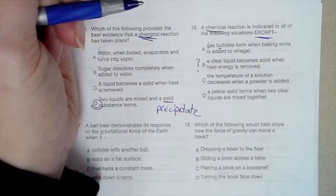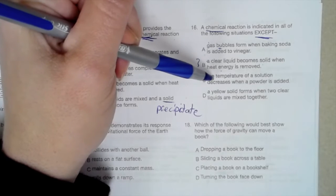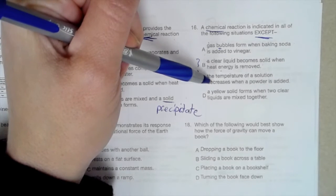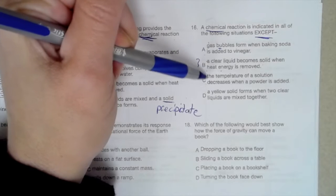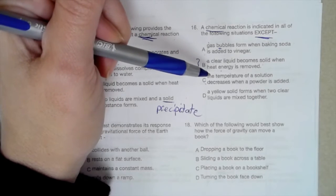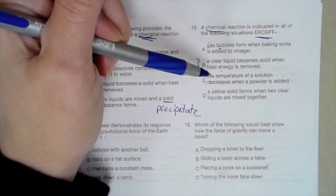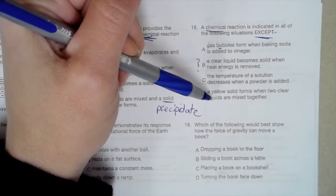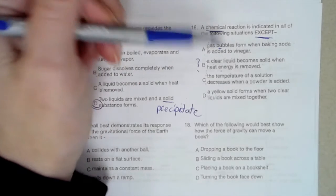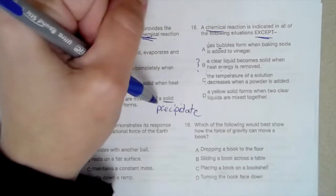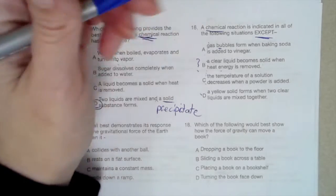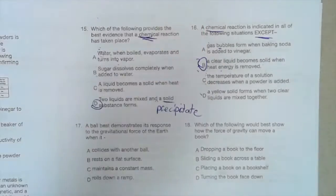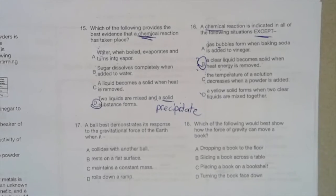The temperature of a solution decreases when a powder is added. A temperature change is an example of a chemical reaction. A yellow solid forms when two clear liquids are mixed together. That's another example of a precipitant, like on number 15. That is a chemical reaction. The only one that was not a chemical reaction was letter B, because it was simply a change in phase. It wasn't a change in what it actually was.